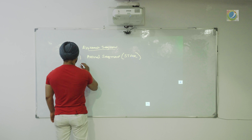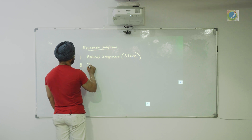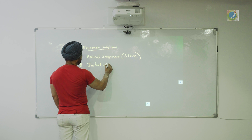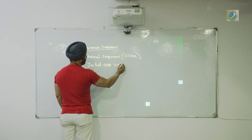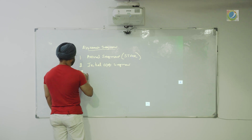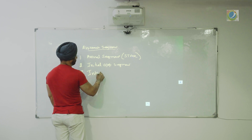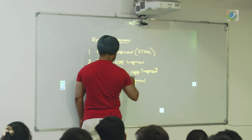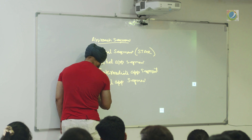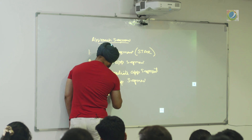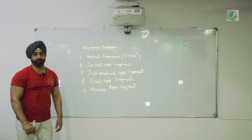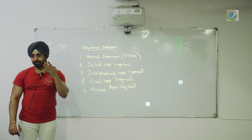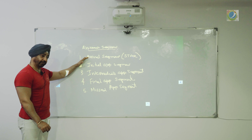Then we have initial approach segment, then intermediate approach segment, then final approach segment, and missed approach segments. So there are five, because you may or may not have an arrival route.